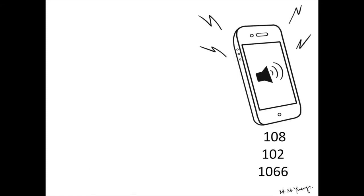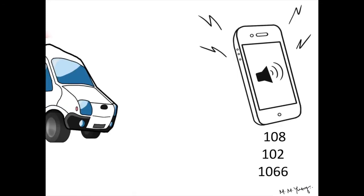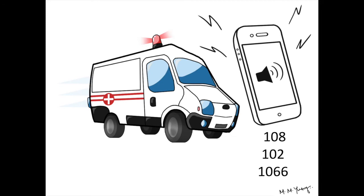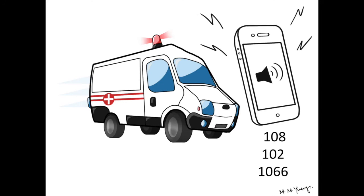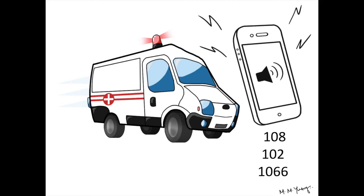First, call an ambulance. If you have someone with you, ask them to make the call. The ambulance number for Chennai is 108 or 102. The Upper Low Hospital's ambulance number is 1066. Leave the phone on speaker — the emergency staff may be able to guide you through the process.